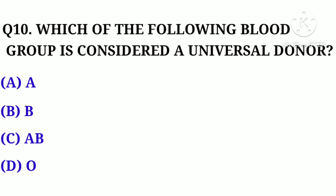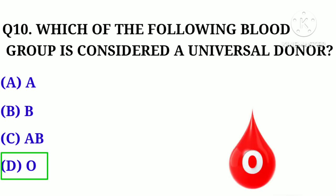Question number 10. Which of the following blood groups is considered a universal donor? Option A. AB, Option B. B, Option C. A, Option D. O. Correct answer: Option D. O.